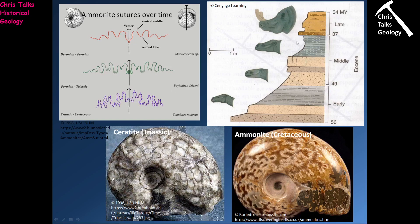We can also see the development of the titanotheres. This is the Eocene — about 56 million years ago to about 34 million years ago. We can see the evolution of this particular species: their head shape changes, the organism becomes larger, and we see the development of nasal horns. The reason we can track this is because we have plenty of fossil material to work with, which allows us to see these changes occurring over time.